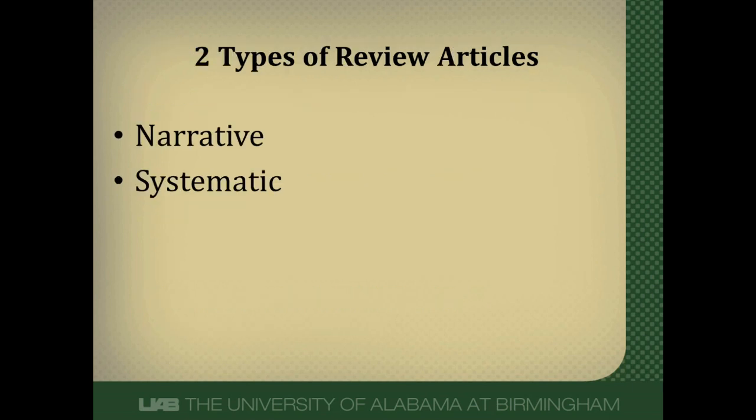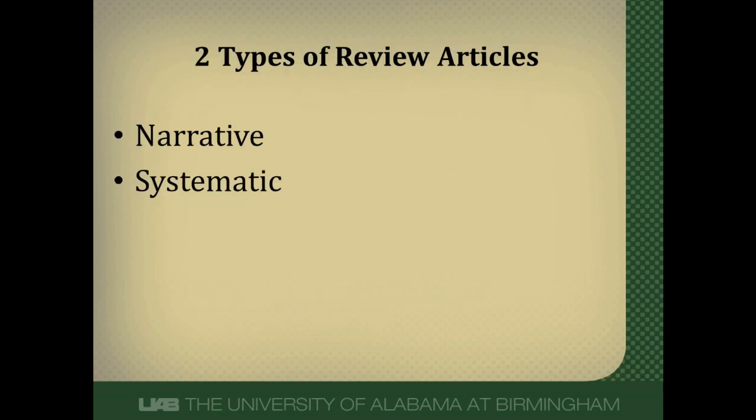Now, there are two types of review articles: narrative and systematic reviews. One key thing to remember is that all reviews are retrospective observational studies. There's no new data created here — we're just looking at studies that have already been done and combining them together. As such, they're prone to bias and random error, just like every other observational and retrospective study.